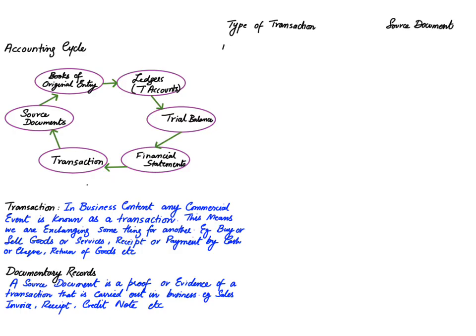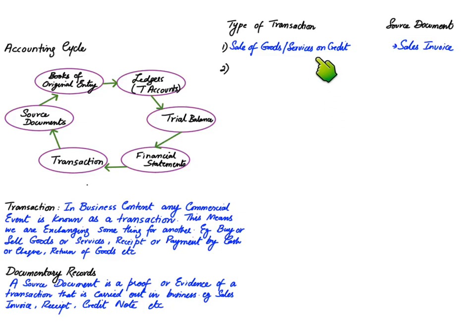Business transactions can be divided into common types, each with a source document. The first transaction is sale of goods or services on credit. Whenever we are selling goods to our customers on credit, the document is known as a sales invoice. A sales invoice is issued by the seller and is only used when selling goods on credit, not on cash terms.